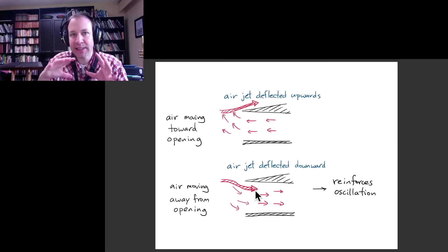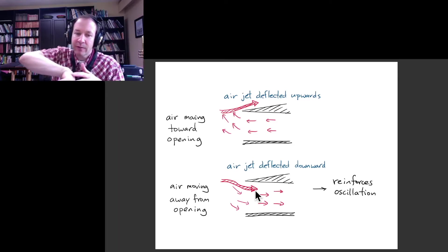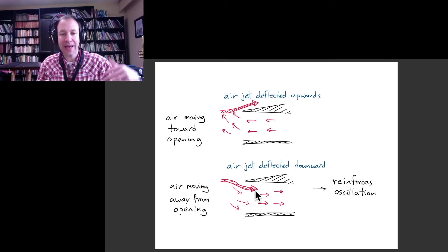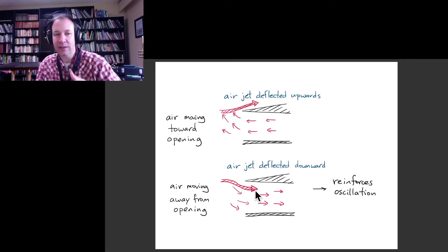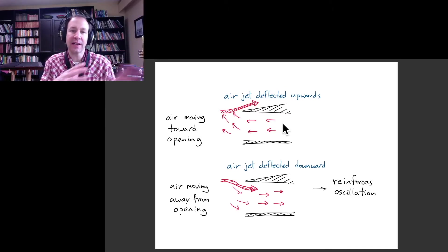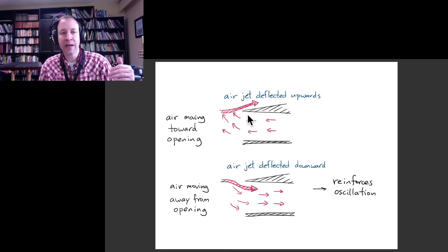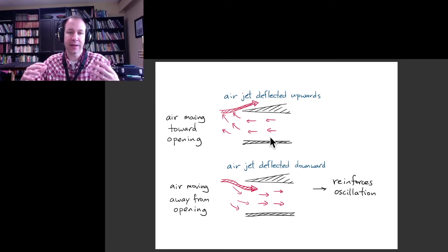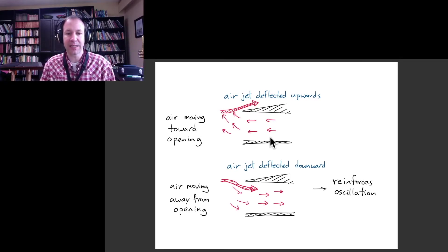And so what you see is that right when the air is going to the right, you get this extra push from the air jet produced by your mouth, and so that reinforces this part of the oscillation. Whereas when the air is going the other direction, then the air jet does not go into the tube, which is good because if it did, that would mess up, that would tend to dampen the oscillation because you'd have these two directions of air competing with each other.